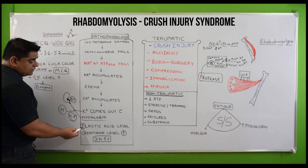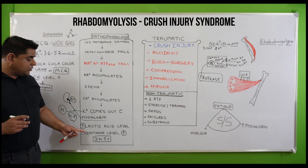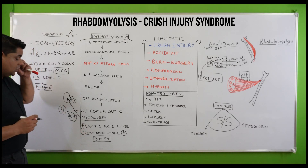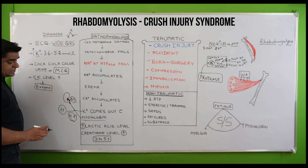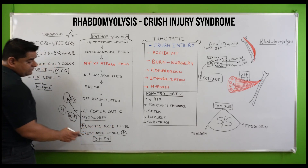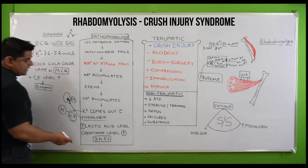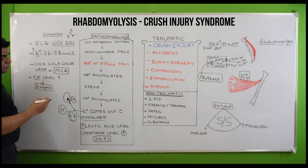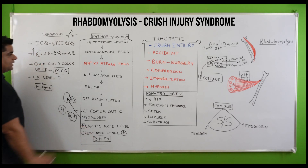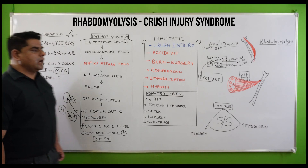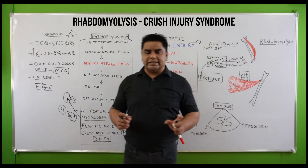The blood lactic acid level will increase, as lactic acid is a byproduct of cell metabolism. Creatinine level will also increase — creatinine is an important base product of muscular activity. So, we have covered the introduction of rhabdomyolysis, its traumatic and non-traumatic causes, and the pathophysiology.